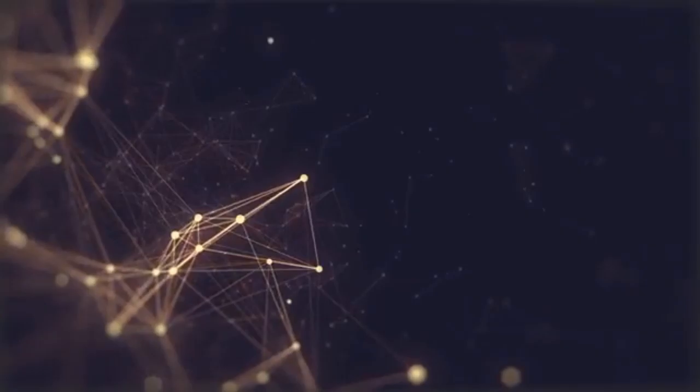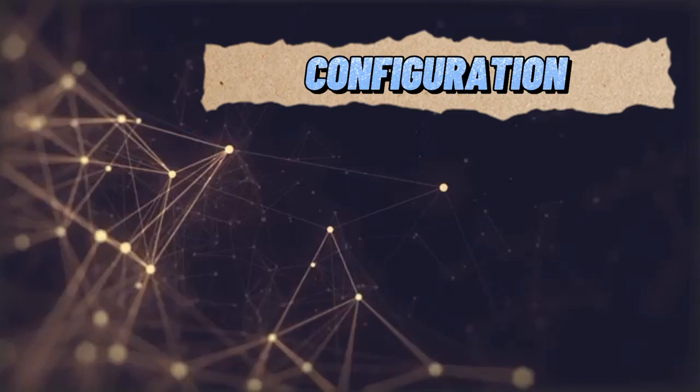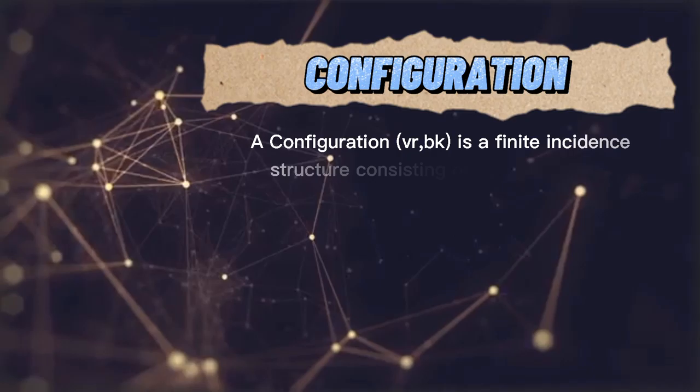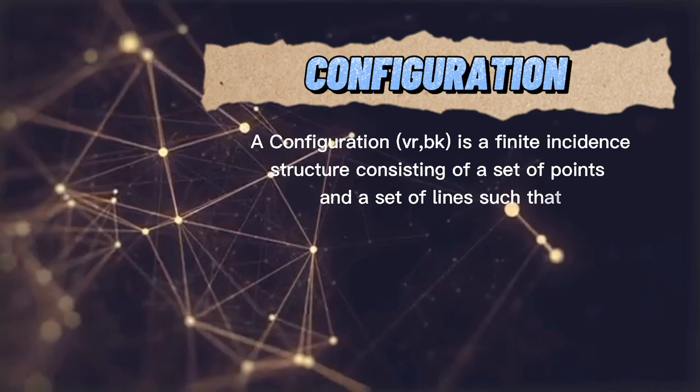In this video we will talk about some types of configurations, but first let us define configurations. A configuration (written VR,BK) is a finite incidence structure consisting of a set of points and a set of lines such that: